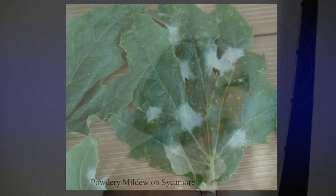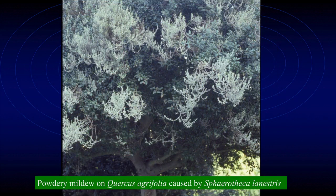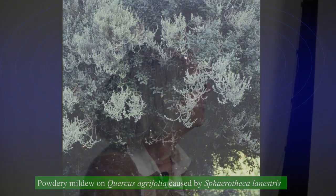Everything gets a powdery mildew - there it is on sycamore, there it is on oaks. Oaks get a couple different kinds. The one on oak actually causes distortion of new tissue - it likes only the new tissue. Powdery mildews take less water than other fungi and will thrive in just about no water but high humidity. The spores blow in the wind, and you've all seen powdery mildew on your roses. Rust is a disease but also a group of many different fungi that cause that disease.